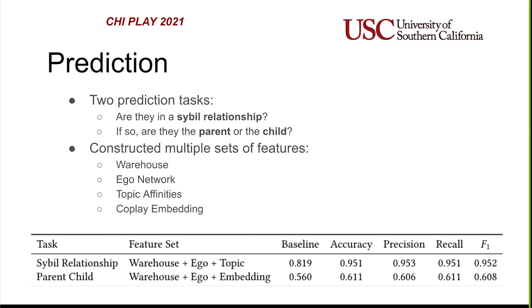Next, we tried to tie all of this together into two prediction tasks. We set up two supervised machine learning problems. The first is whether or not an account is in a Sybil relationship. The second is, if they are, whether they are the parent or the child. To do this prediction, we tried four sets of features: warehouse behavioral features, the ego network, topic affinities, and a network embedding of the co-play network. We found that in both tasks we were able to significantly outperform a baseline, and that the warehouse and ego features are the most important for both tasks.